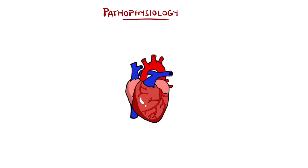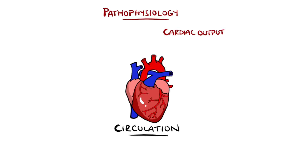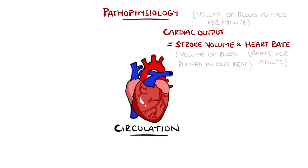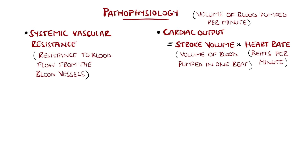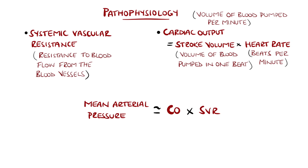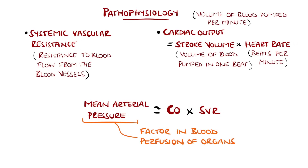Circulation is compromised in sepsis, and knowing some physiology makes sepsis much easier to understand. The components that affect blood circulation are the cardiac output, given by the stroke volume multiplied by heart rate, and the systemic vascular resistance, which is the resistance blood encounters in the blood vessels, also known as afterload. When these two are multiplied together, they roughly provide the mean arterial pressure, which is a major determinant of perfusion and therefore delivery of blood to tissues.